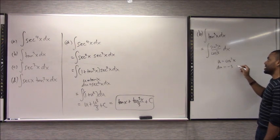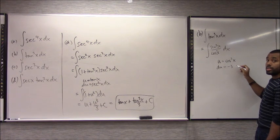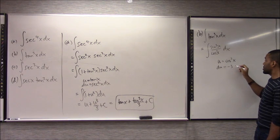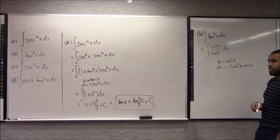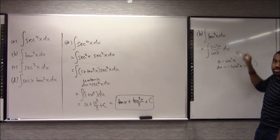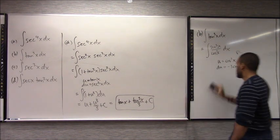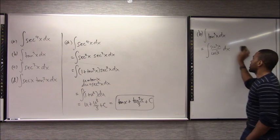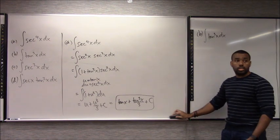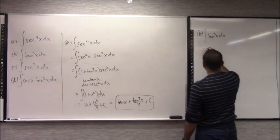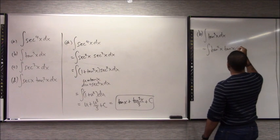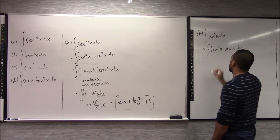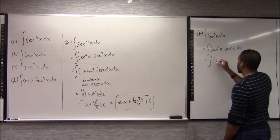You guys are just guessing now. It's cosine squared times sine. Is that helpful? No. So that's equal to the integral of tangent squared x times tangent x dx, and then change tangent squared x to secant squared x minus 1.